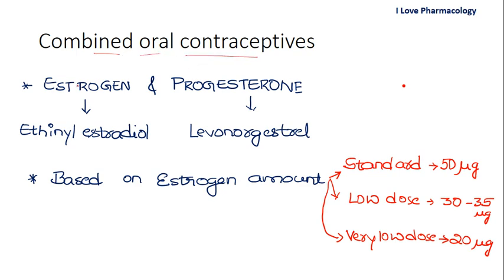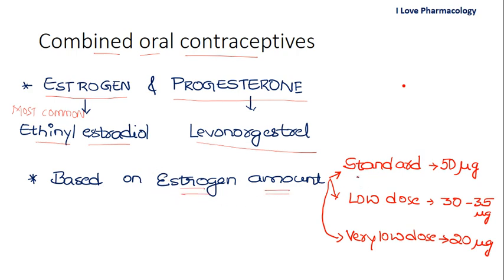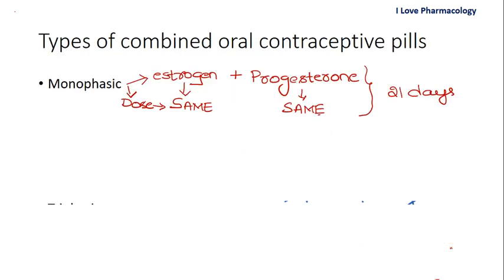Combined oral contraceptive pills are made up of two components — estrogen and progesterone — given in a fixed dose combination. The most common estrogen is ethinyl estradiol and the most common progesterone is levonorgestrel. Based on the amount of estrogen, COC can be classified into standard dose with 50 micrograms, low dose with 30 to 35 micrograms, and very low dose with 20 micrograms.